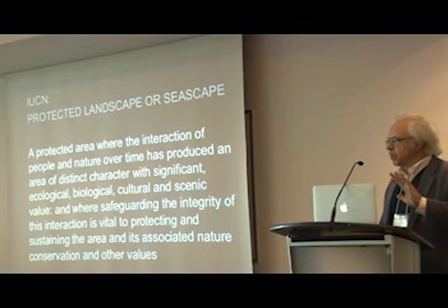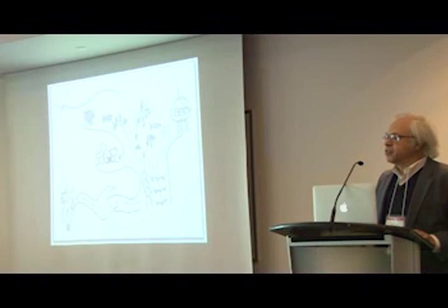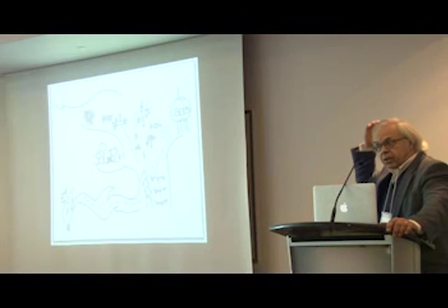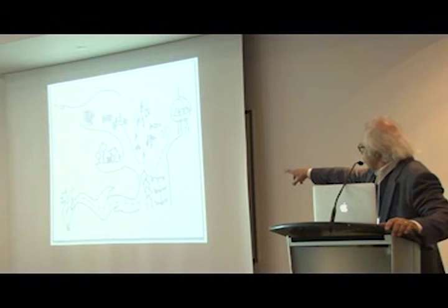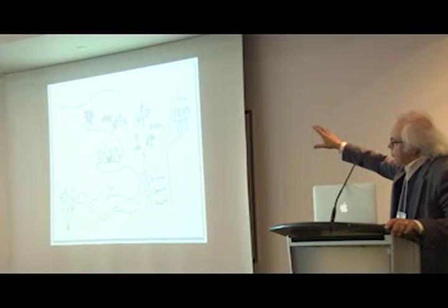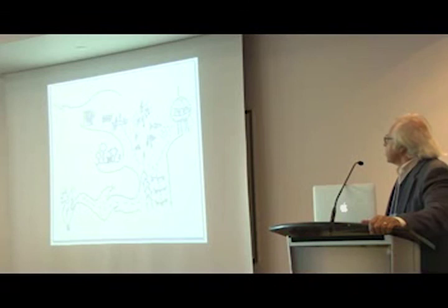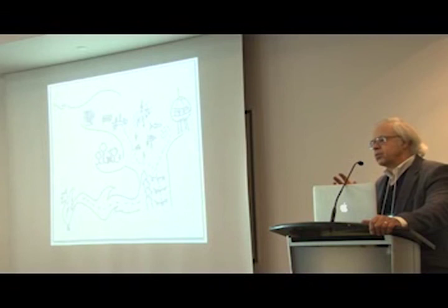I'll close with this — a drawing of Kensington Market by somebody who spent a lot of time there. This is as accurate a map of it as any Google map. You've got the Globe on Spadina, the stores, the flags, Bellevue Park off to the left in the middle, the music — some of it within the boundaries, some of it slipping over the edges to some of the performance areas. We have to honour the fact that cultural heritage landscapes are understood from inside, not from outside. Thank you.